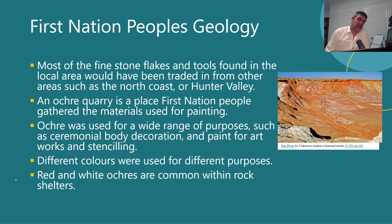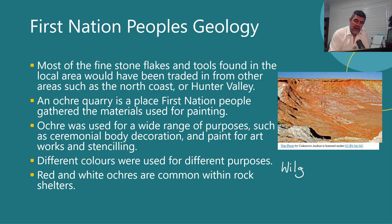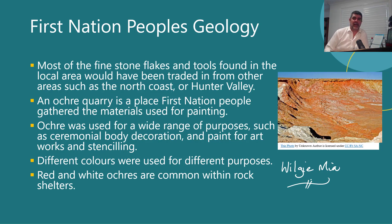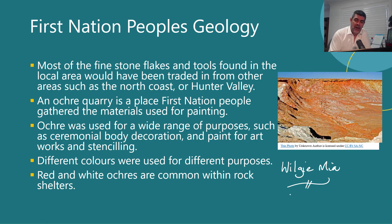An ochre quarry is a place that First Nations people used to gather the materials they used for painting. One of the things I will get you to do is to look at Wilgi Mar. Wilgi Mar is the oldest continuous quarry — or the oldest continuous mining site — and it's probably around about 20,000 years old. It's a place where ochre was mined, and it's found in WA.